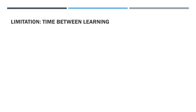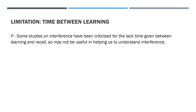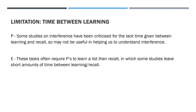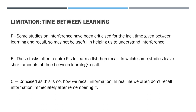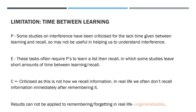The second limitation concerns the time between learning. Some studies on interference have been criticised for the lack of time given between learning and recall, so they may not be useful in helping us understand real-world interference. These tasks often require participants to learn a list and recall it straight away — usually after short amounts of time. This isn't what would happen in everyday life, as there is usually a significant time lag. So the studies may exaggerate the influence of interference — whilst interference may occur, it might not have as large an effect as we think.